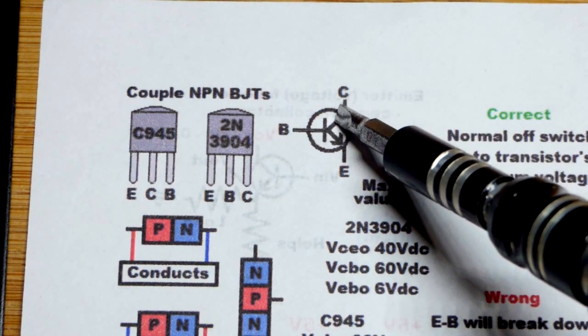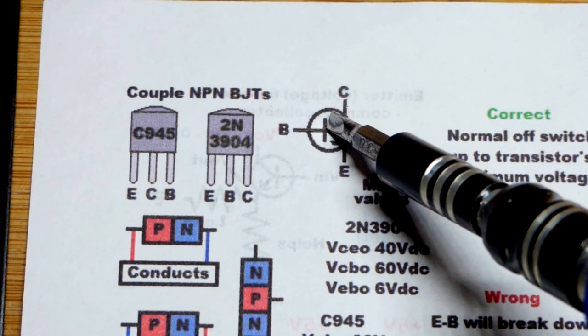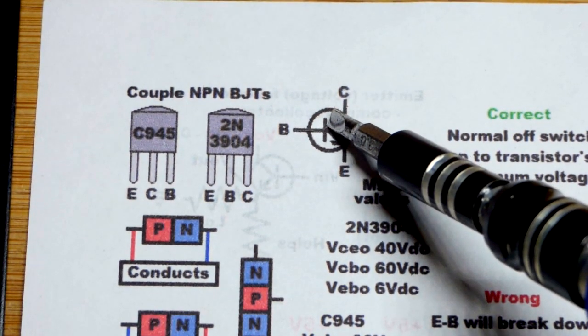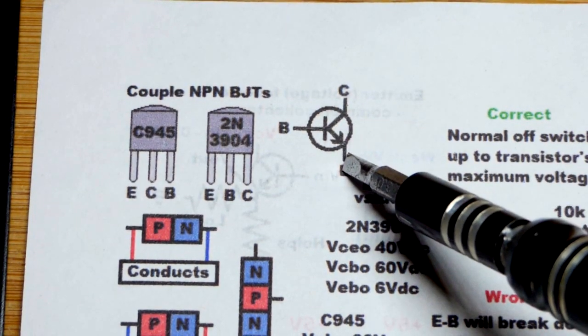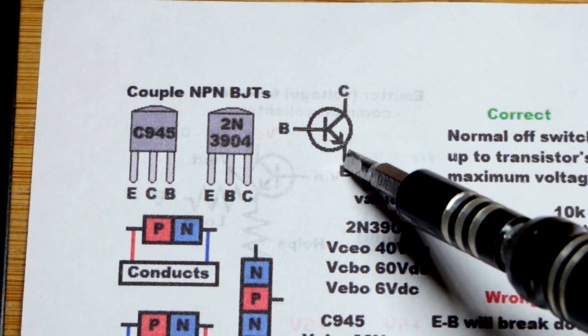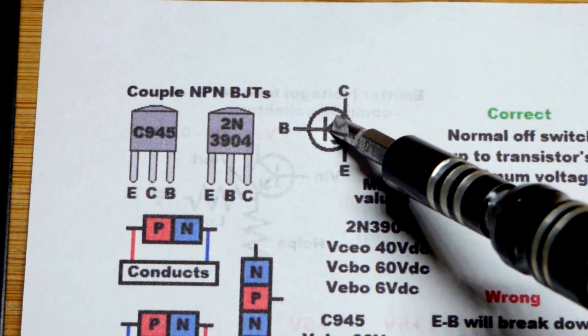But the collector is the line on this side of the bar without an arrow. And then on the same side of the bar, we have a line with an arrow. It's not pointing in. That helps you know that it's NPN. It's pointing out.